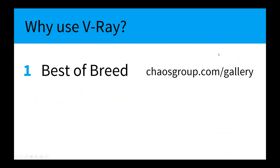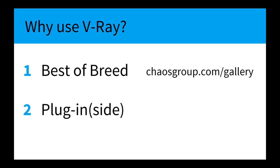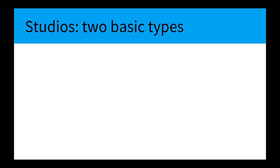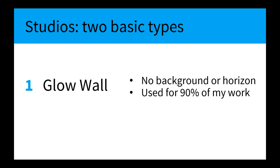Getting into the 3D stuff, we're going to cover two studio types based on real-world equivalents. The first is what I call the glow wall — this gives a really sweet, clean environment with no background at all, no horizon, and the focus entirely on the work. I use this for about 90% of my projects. When I can't use that — maybe because the object is too transparent or too shiny — we use a simple bowl studio, like seamless paper in a photographer's studio.